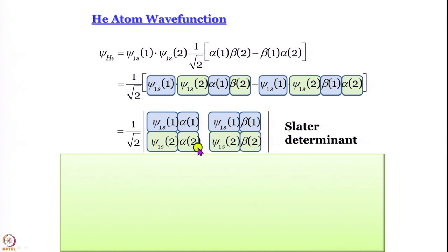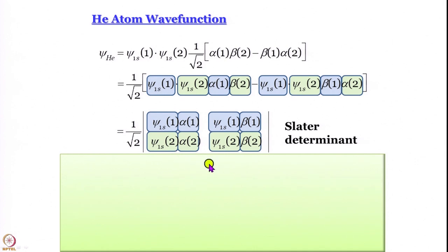Similarly, in the second row going from first column to the second one, electron number remains 2, but from psi_1s_2_alpha_2 we go to psi_1s_2_beta_2. So on going from left to right in the determinant, the spin orbital changes and the electron label remains the same.